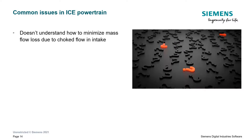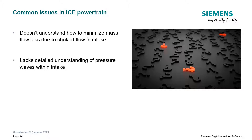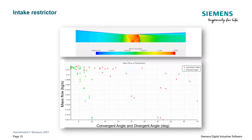Teams also don't know how to reduce mass flow restrictions that may occur in their intake under choke conditions, and they lack an understanding of how specific CAD changes in their intake affect pressure waves over time. To address the first issue, this article in our FSAE forum shows how to leverage the optimization built into Star CCM Plus to optimize the mass flow rate through the intake restrictor under choke conditions by finding the optimal angle upstream and downstream of the restrictor. Note that the article contains the files needed to run the case.